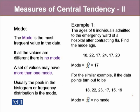The other measure of central tendency is mode. The mode is the most frequent value in the data. If all the values are different, there is no mode. A set of values may have more than one mode. Usually the peak in the histogram or frequency distribution is considered as the mode.